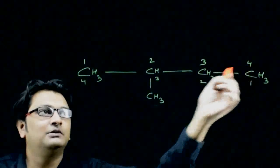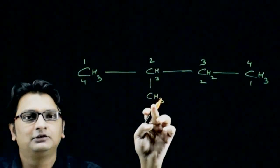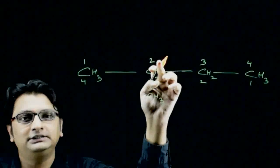We will take the upper numbering because this alkyl group is getting the least number, two.